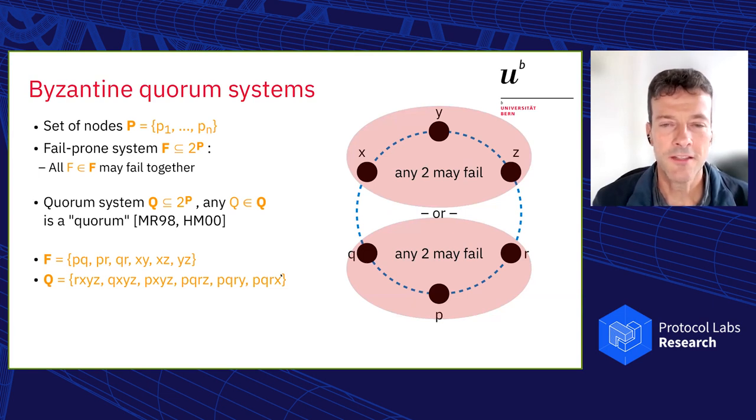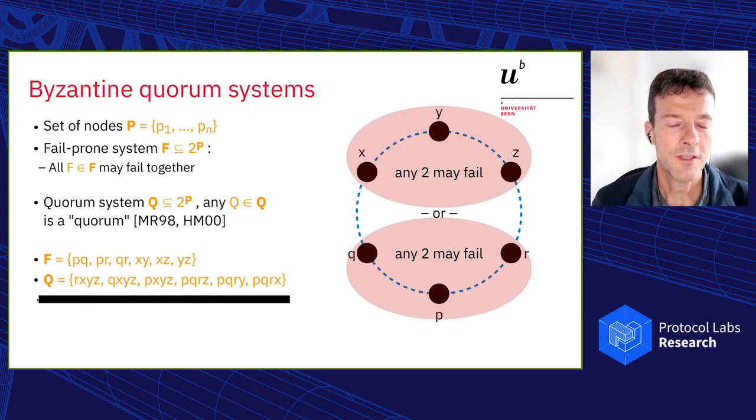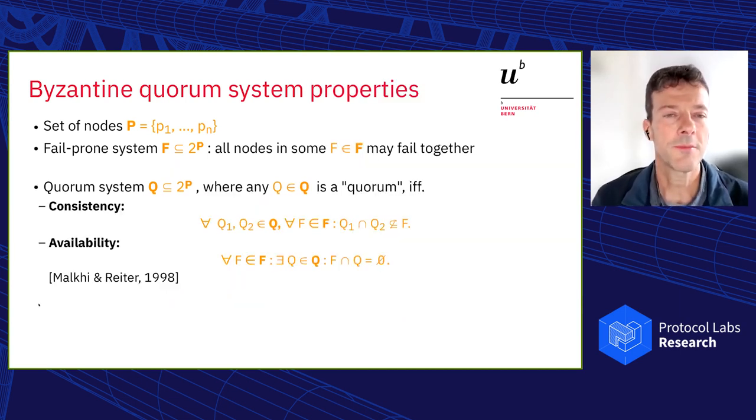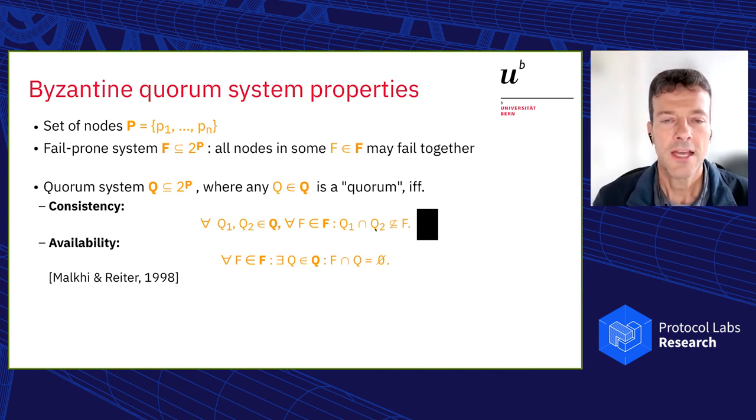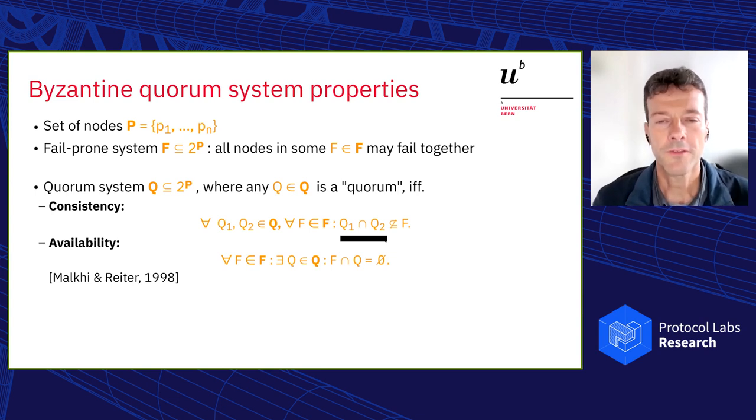Malkhi and Reiter did that in '98, and from this we can enumerate here all the sets of nodes that may fail together. As a complement, we get out the sets that we can use as quorums, and then we trust those for decisions in the protocol. Formally we can define this mathematically. The Byzantine quorum system has these properties, namely there is a consistency property and an availability property where every two quorums must overlap in at least one correct process, because we now have this system or this collection of fail-prone sets. The intersection of any two so-called quorums must contain at least a subset that contains strictly more than something that could fail. And availability, inevitably, we must find a quorum around.